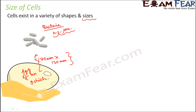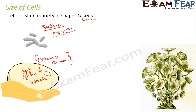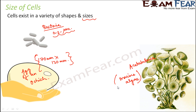So if you talk about cell size, it starts from microns and goes up to millimeters or centimeters. Similarly, if you talk about marine algae, there is Acetabularia — an algae found in marine, that is sea water. This marine algae is around 5 cm long, which is quite long. That is the size of this cell.